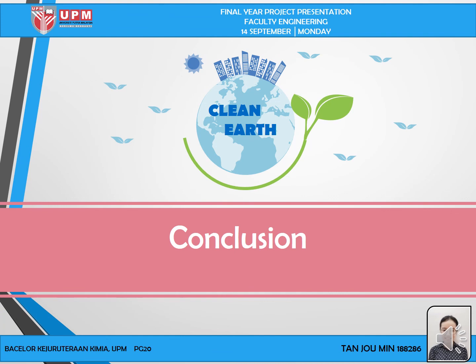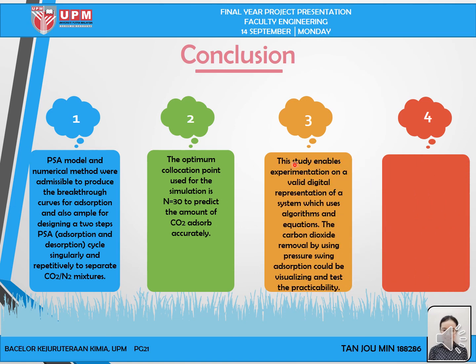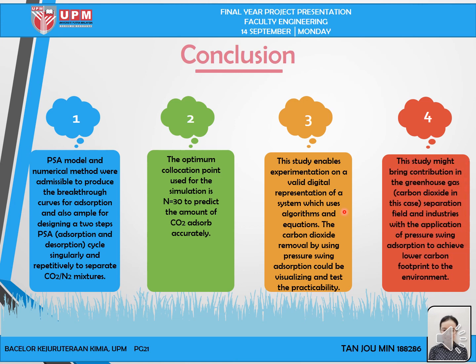In conclusion, the PSA model and numerical method were adequate to produce a breakthrough curve for absorption and sufficient for designing a two-step cycle both singularly and repeatedly to separate the carbon dioxide and nitrogen mixture. Secondly, the optimum collocation point used for the simulation is n equal to 30 to accurately predict the amount of carbon dioxide absorbed. In general, this study enables experimentation on a valid digital representation of a system using algorithms and equations. The carbon dioxide removal by PSA could be visualized and tested for practicability, and I hope this study contributes to the greenhouse gas separation field with the application of pressure swing absorption to achieve a lower carbon footprint.